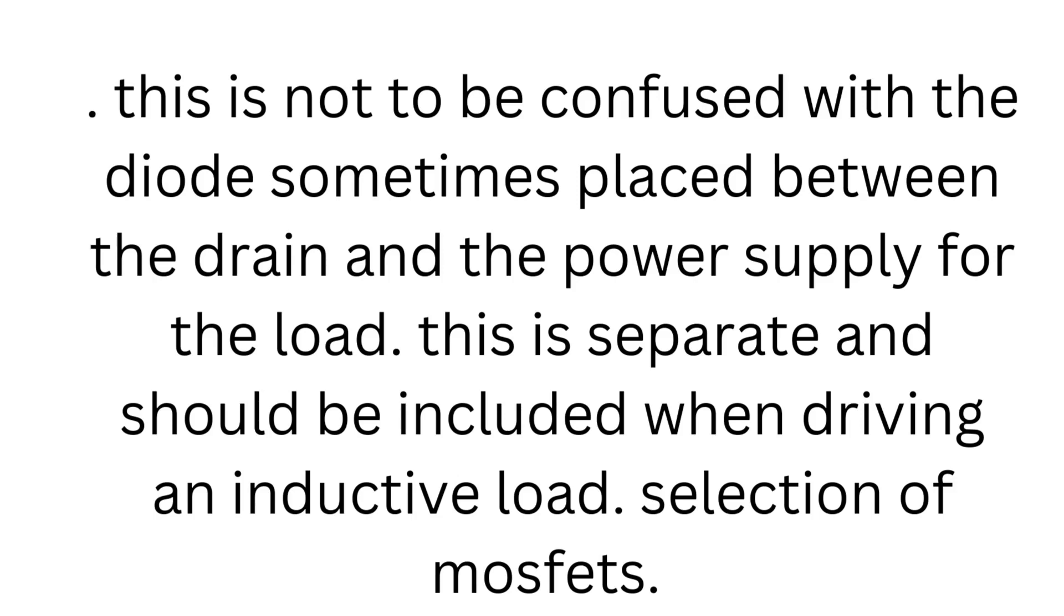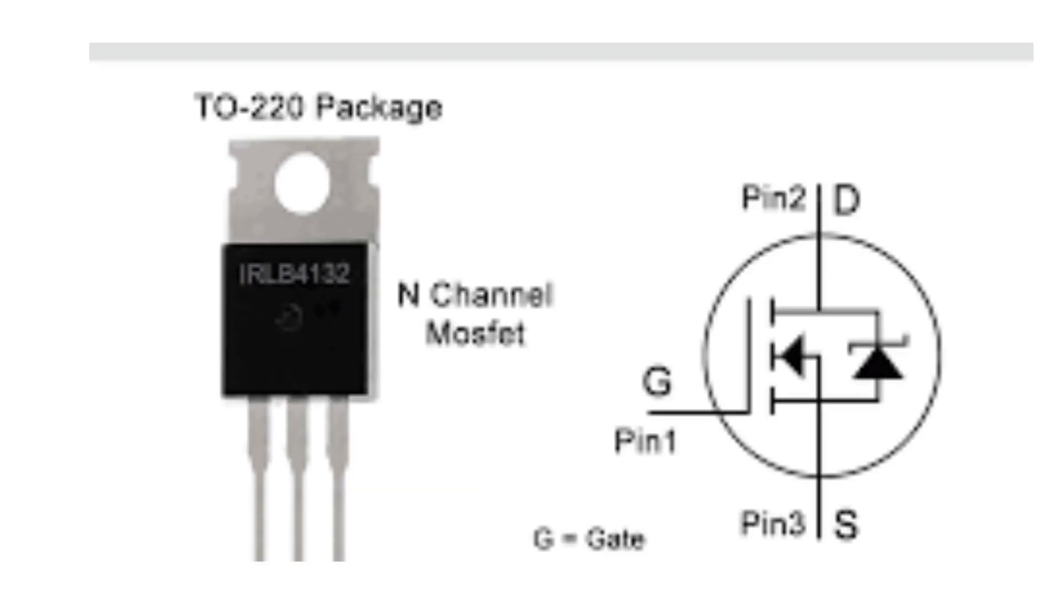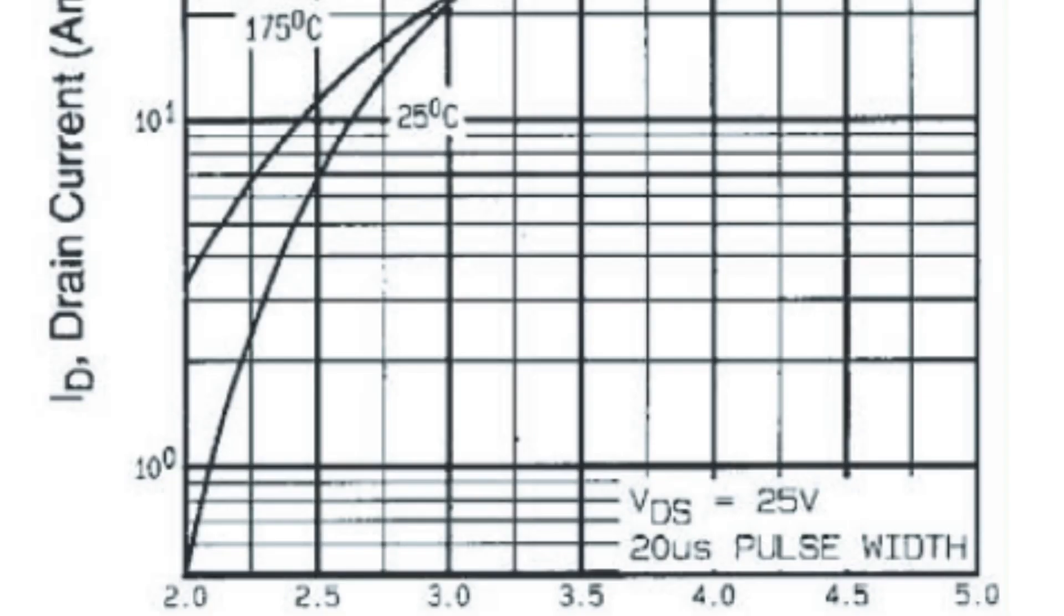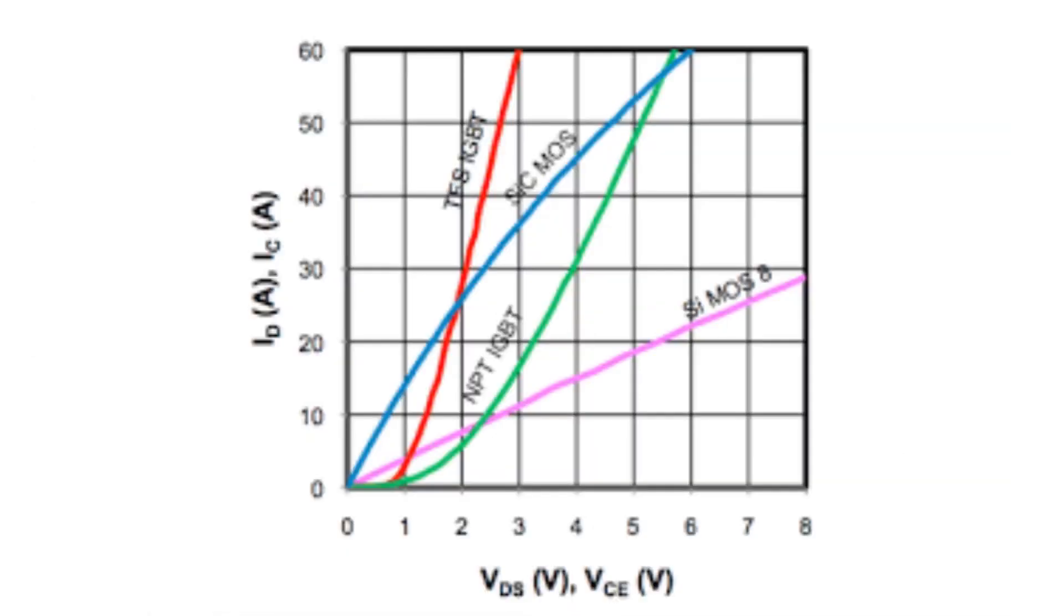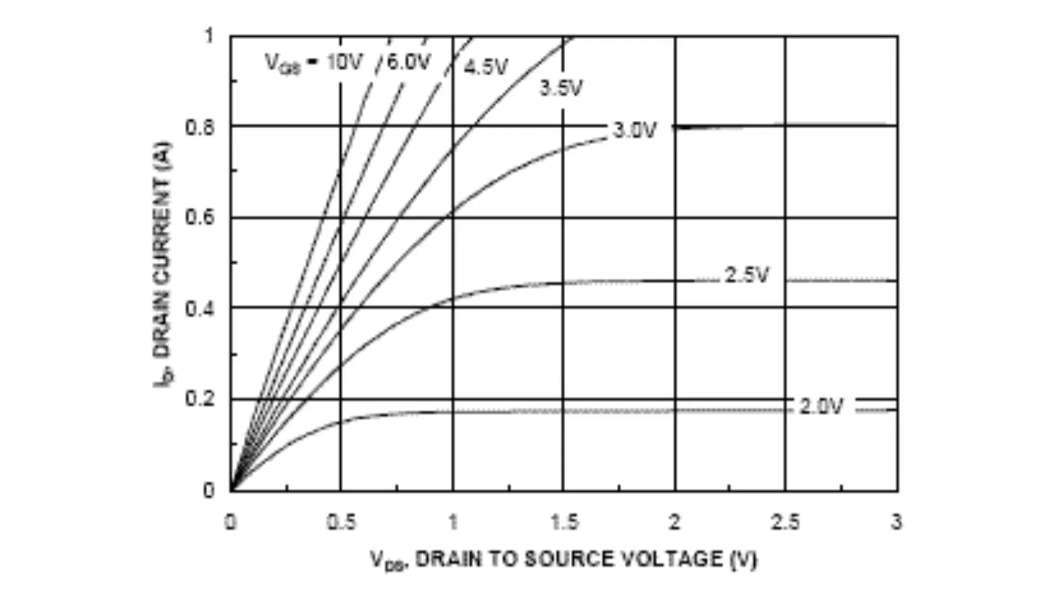Selection of MOSFETs: In the datasheet for a MOSFET, a graph will typically be included showing on-state properties at various gate voltages. The key specification here will typically be given as a graph of the drain current, ID, versus drain source voltage. This is the voltage drop across the MOSFET with several lines for different gate voltages.